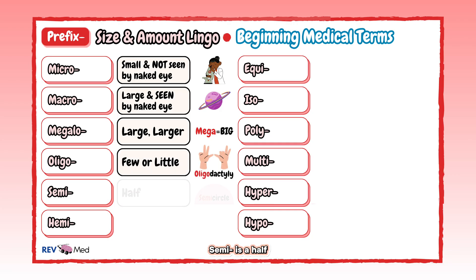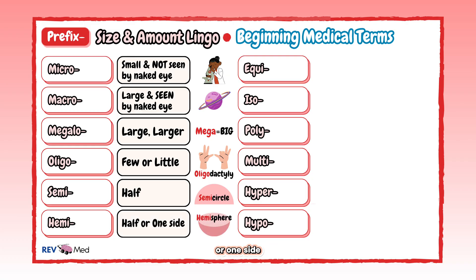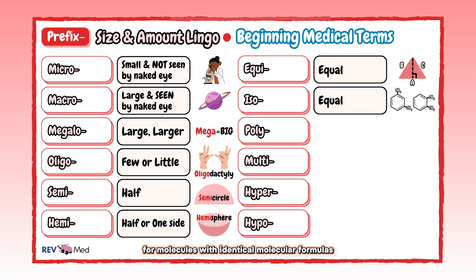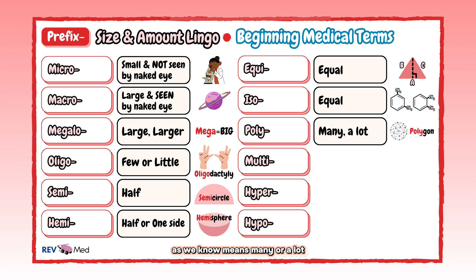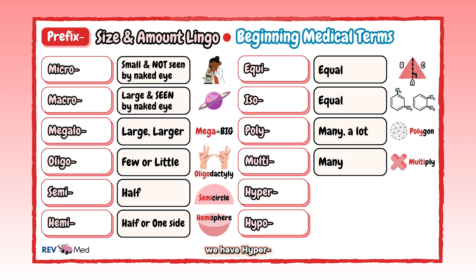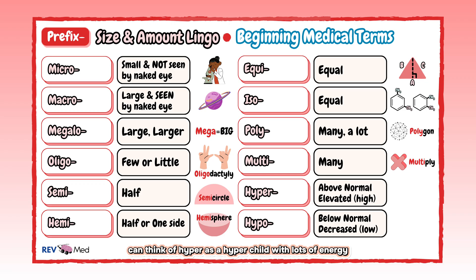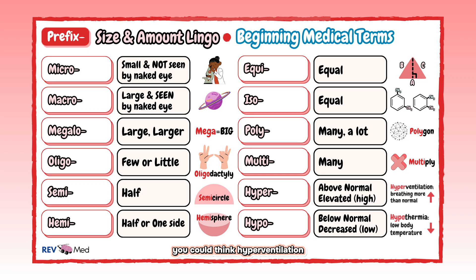Megalo also means something large — it's in the word mega. Semi means half — think semicircle. Hemi means half or one side — think hemisphere. Equi and iso both mean equal — think equilateral triangle and isomers from chemistry. Multi also means many — think multiply. Hyper means above normal, high, or elevated — think hyperventilation, breathing more than normal. Hypo is the opposite, meaning below normal or deficient — think hypothermia, abnormally low body temperature.